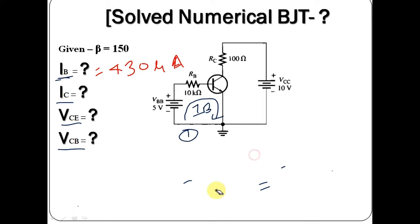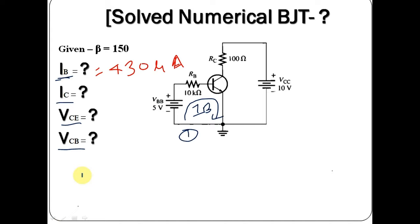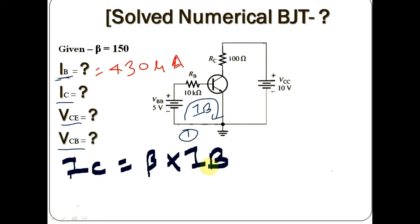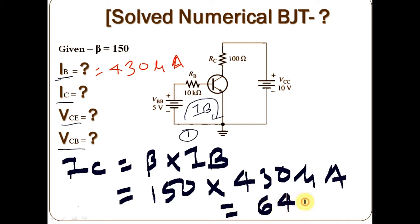Now let us find the value of IC. It is very simple — there is a straightforward equation: IC equals beta times IB. Since beta equals 150 and IB equals 430 microampere, you can directly calculate the value of IC, which is 64.5 milliampere.